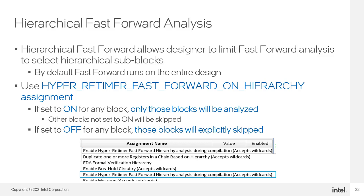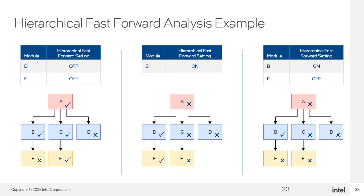If you set the assignment to OFF for any blocks, they will be explicitly left out of the analysis. In the left example, Hierarchical Fast Forward has been disabled for modules D and E, so all remaining modules A, B, C, and F will be analyzed — useful for ignoring specific IP or legacy code. In the middle example, Hierarchical Fast Forward has been enabled for Module B, so B and its sub-module E will be analyzed while the rest of the design is ignored. In the right example, Fast Forward is enabled for B but disabled for E, explicitly excluding sub-module E from the analysis.